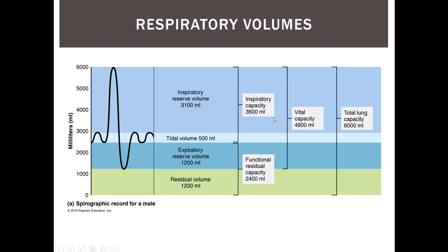Looking at the figure, you can see the tidal volume — a normal 500-milliliter breath. You can see the expiratory reserve: how much extra can you exhale? Here is the inspiratory reserve: how much extra can you inhale? That gives you your vital capacity — how much of the air inside your lungs can you exchange with the environment — leaving a little bit as the residual volume. Vital capacity plus residual volume gives you your total lung capacity.